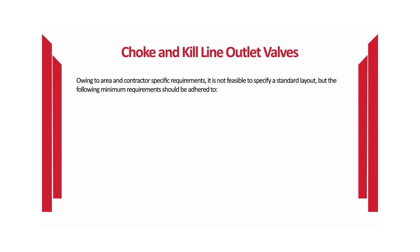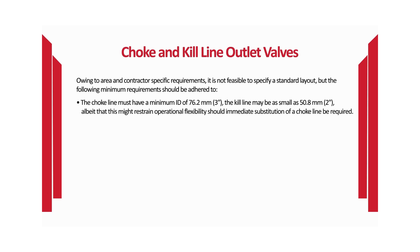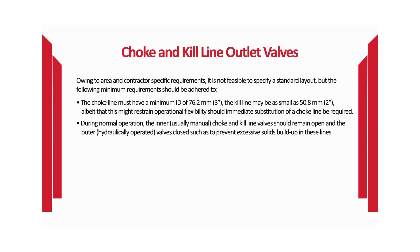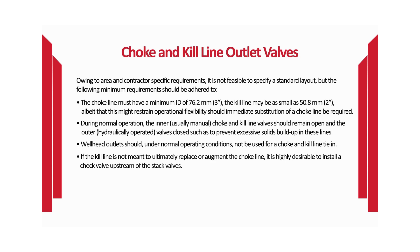Regarding choke and kill line outlet valves, owing to area and contractor specific requirements it is not feasible to specify a standard layout, but minimum requirements should be adhered to. The choke line must have a minimum ID of 76.2 mm; the kill line may be as small as 50.8 mm, though this might restrain operational flexibility. During normal operation, the inner manual choke and kill line valves should remain open while the outer hydraulically operated valves close to prevent excessive solids build-up. If the kill line is not meant to replace or augment the choke line, a check valve upstream of the stack valves is highly desirable.